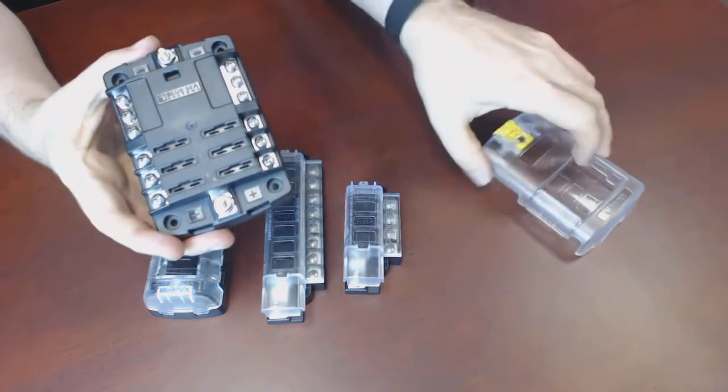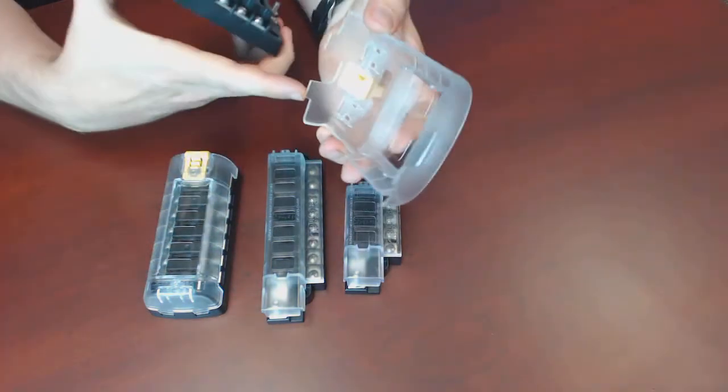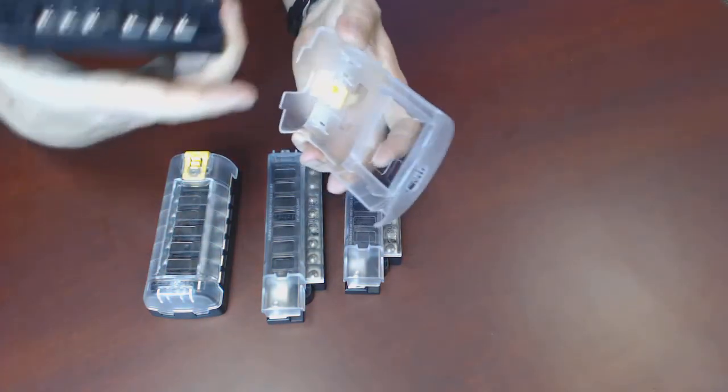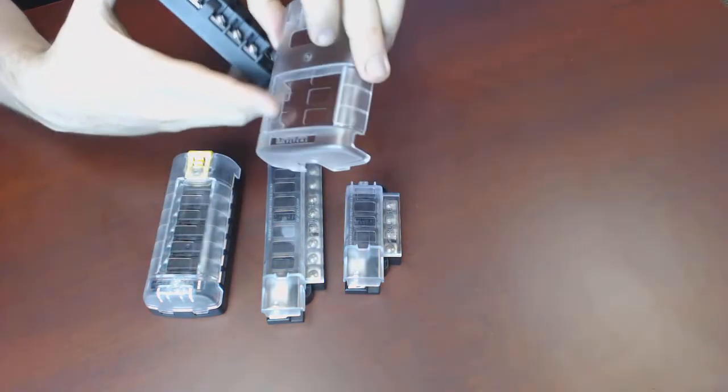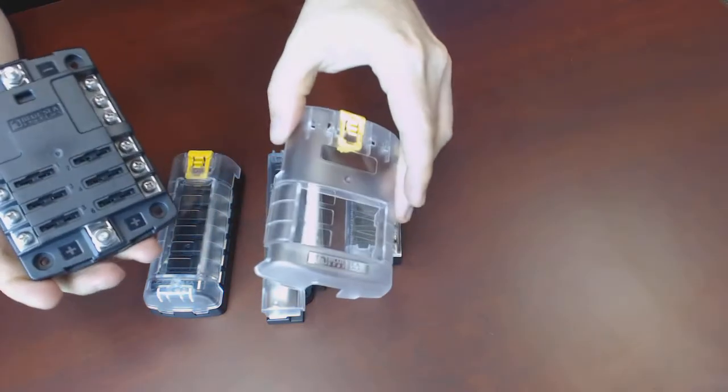It has the great Blue Sea positive snap-on cover, and the cover has room to store a couple spare fuses. It's got spaces for labels for the fuse block itself and for individual fuses.